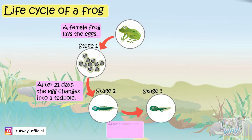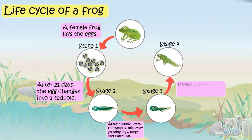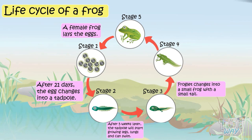After about 5 weeks, the tadpole starts growing legs and lungs and can swim gradually. This frog then changes into a small frog with a small tail, and keeps on changing into a fully grown frog. The tail starts vanishing, and at the end there is no tail on the frog.